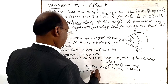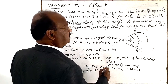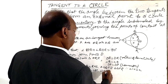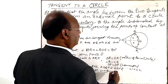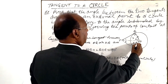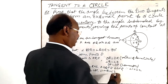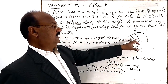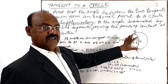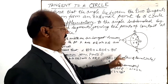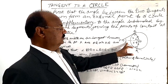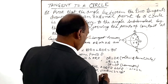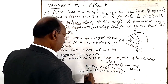In triangle OQP, the sum of the three angles is 180 degrees, so we can write: angle 1 plus angle Q plus angle 3 equals 180 degrees, because the sum of three angles in a triangle is 180 degrees.